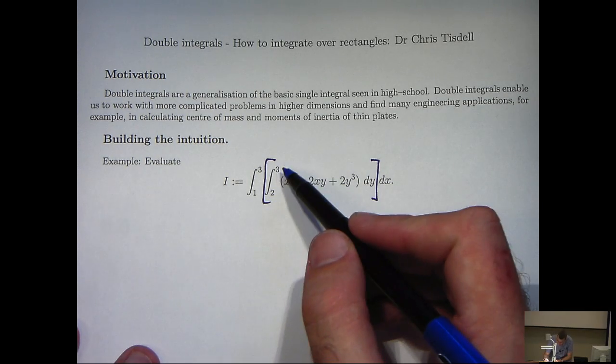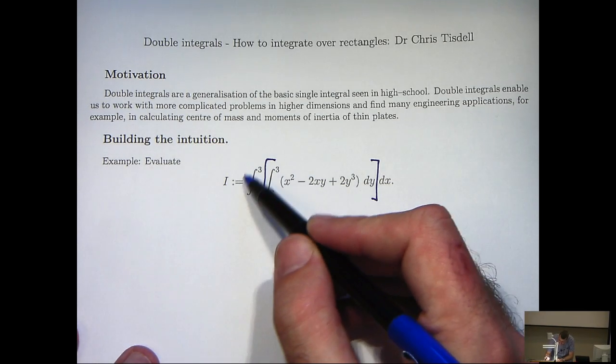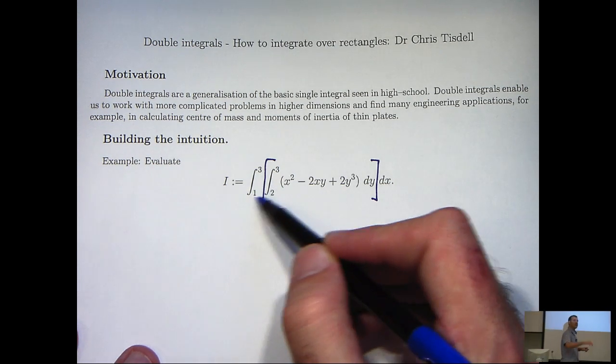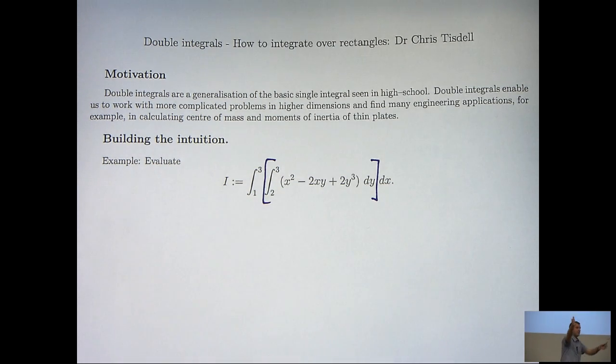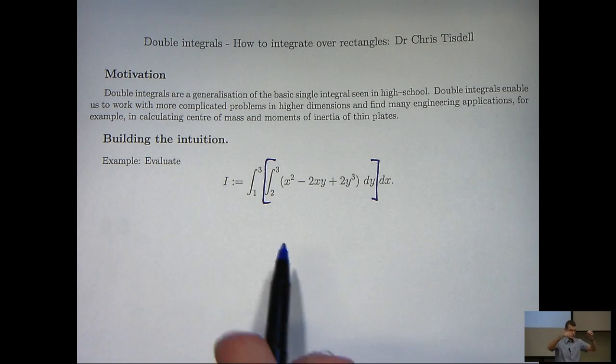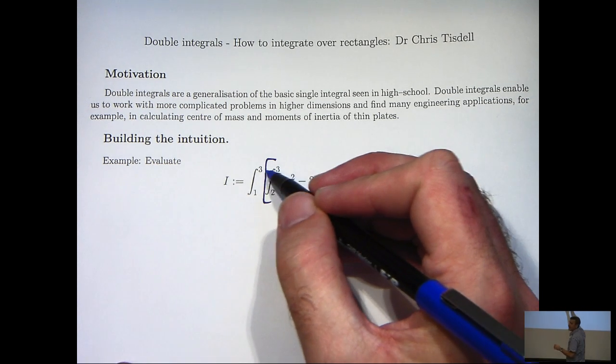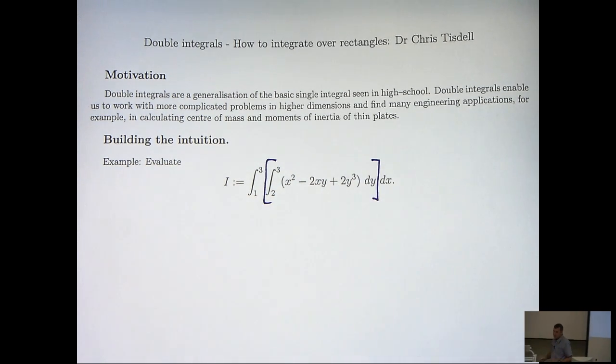However, with double integrals, the region of integration, as illustrated by these upper and lower limits, is a two-dimensional set. In this case, it's a rectangle because we have constants in both the upper and lower limits of integration in both integral signs.